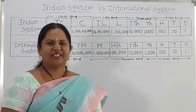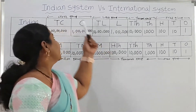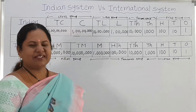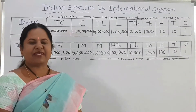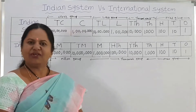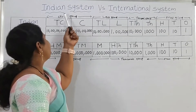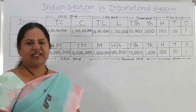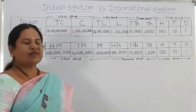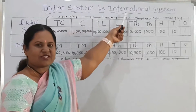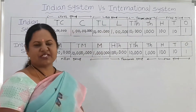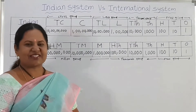Today's topic is the difference between the Indian system and international system of numeration. The Indian system is used in India, Pakistan, Bangladesh, and some other countries. Most countries follow the international system of numeration, and it is widely used in international communications also.